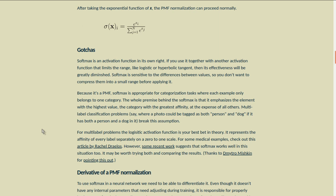Because it's a PMF, softmax is appropriate for categorization tasks where each example only belongs to one category. The whole premise behind the softmax is that it emphasizes the element with the highest value, the category with the greatest affinity, at the expense of all the others. Multi-label classification problems, say where a photo could be tagged as both a person and a dog, if it has both a person and a dog in it, break this assumption.